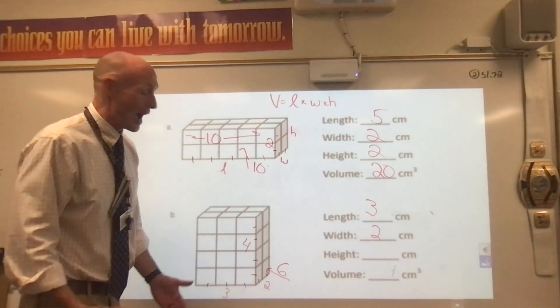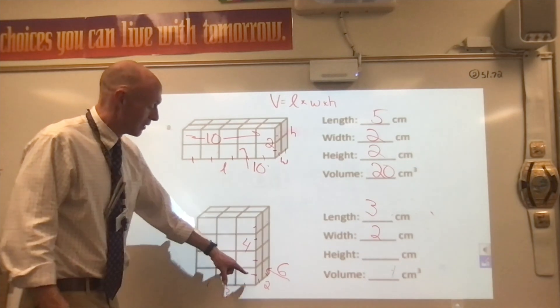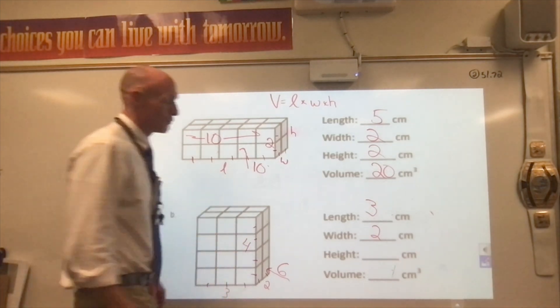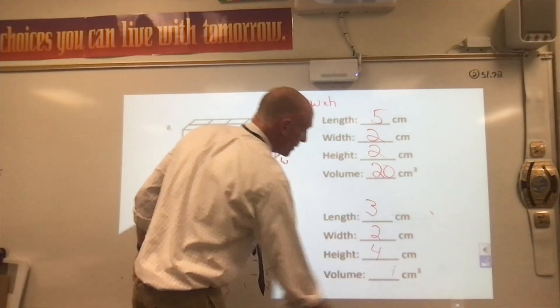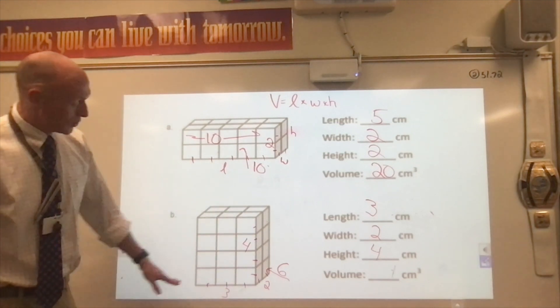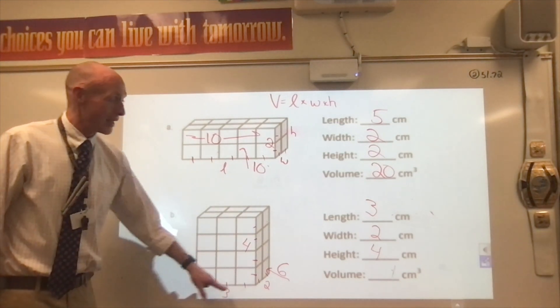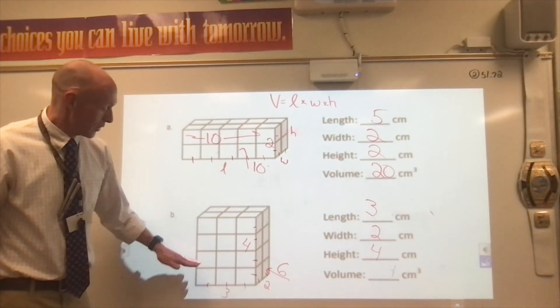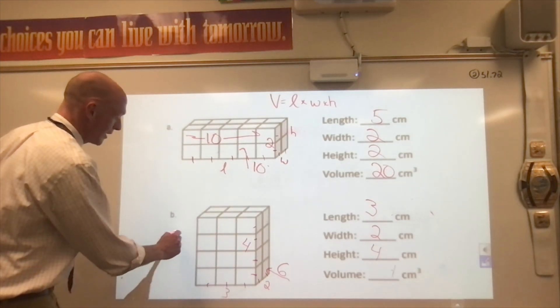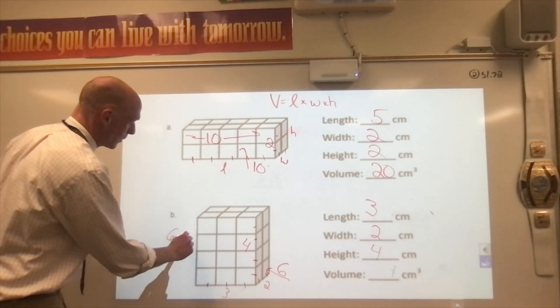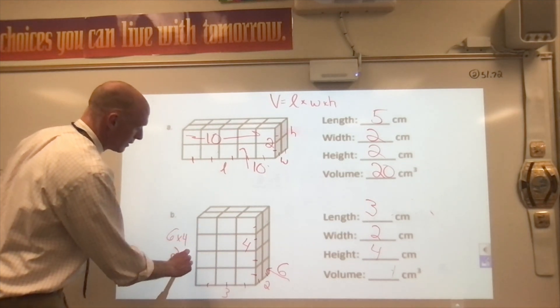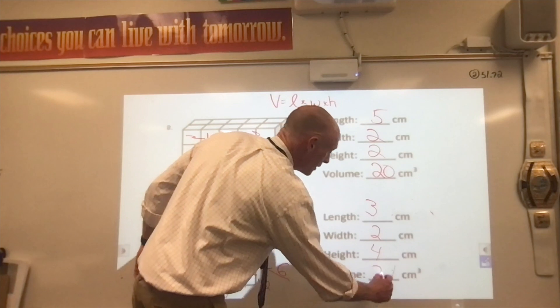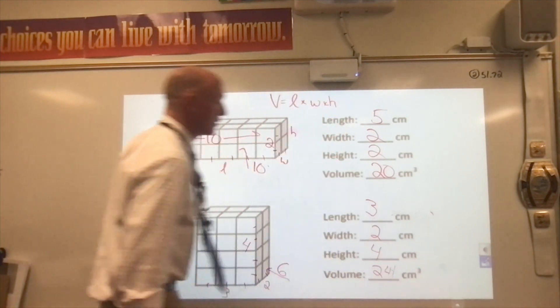Question is, how many layers are there? We figured out our height is four. So what you could say is our bottom layer has six. And then how many layers are there? There's four layers. So we're going to say six times four gets us twenty-four. Good deal.